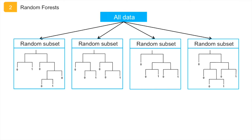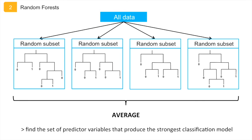In a random forest analysis, each split within a decision tree is determined using a random subset of the environmental variables. The trees are grown to their maximum size without pruning, and then the predictions of all trees are averaged to find a set of predictor variables that produce the strongest classification model.